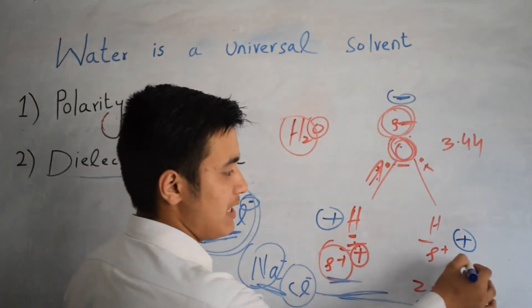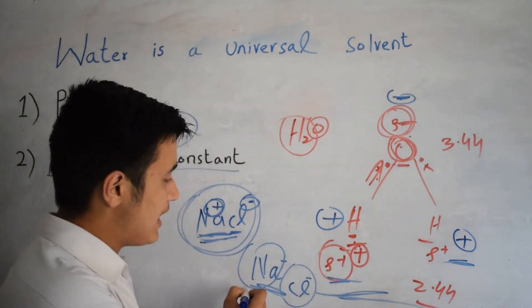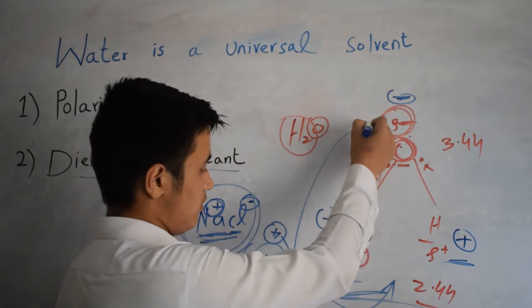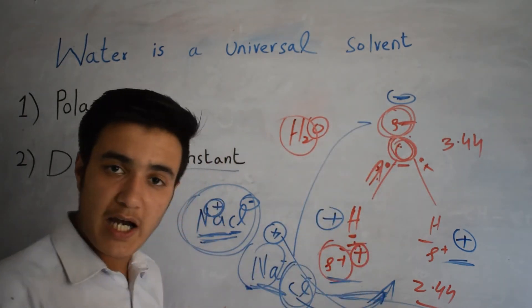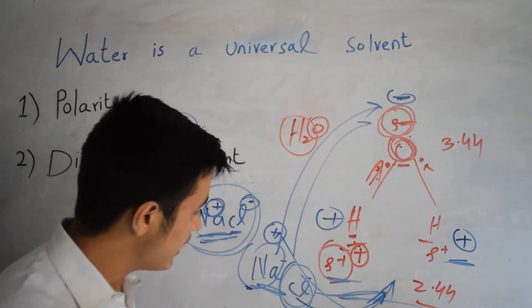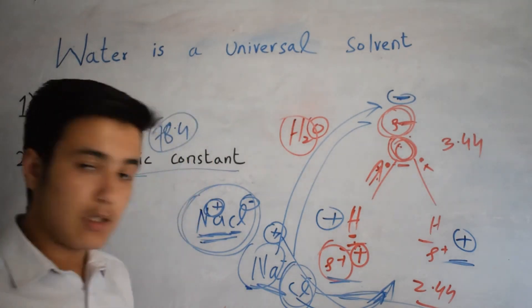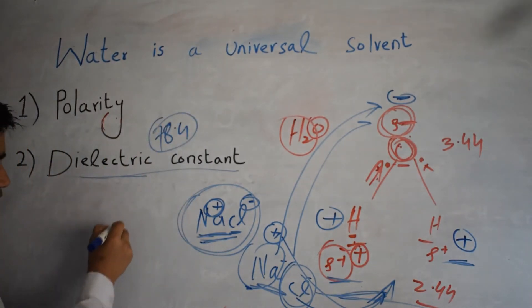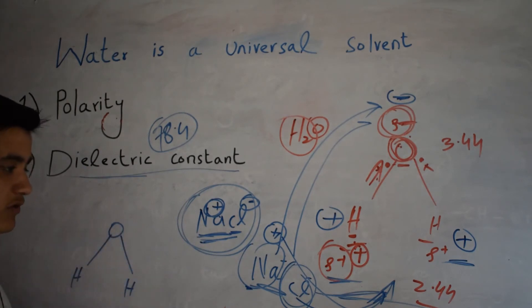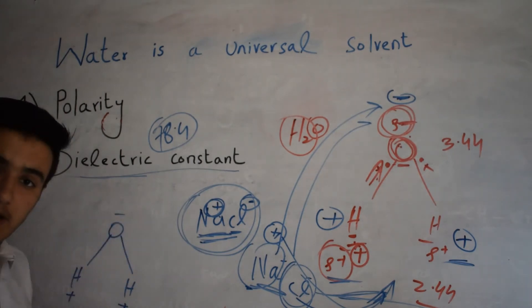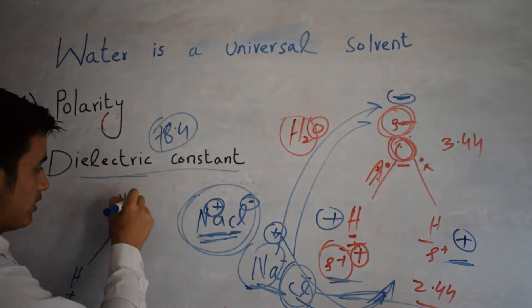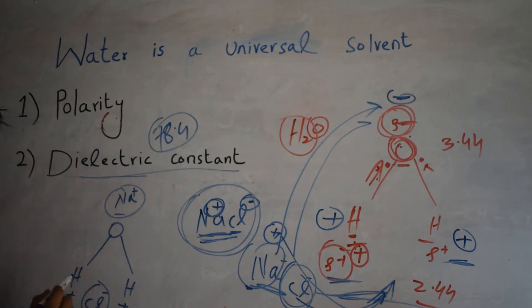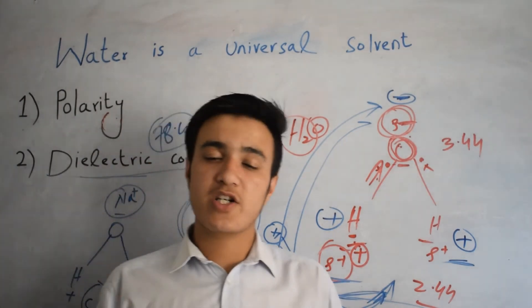First, the dielectric constant divides the whole compound into two ions, and then polarity starts its action. You can see that hydrogen carries a positive charge while oxygen carries a negative charge. The Na⁺ ion will be attracted toward the oxygen side, which is the negative charge, and the Cl⁻ ion will come toward the hydrogen side, which carries the positive charge. So the table salt mixes inside the water in this way.